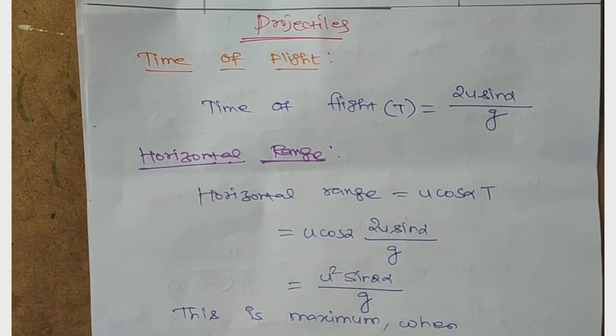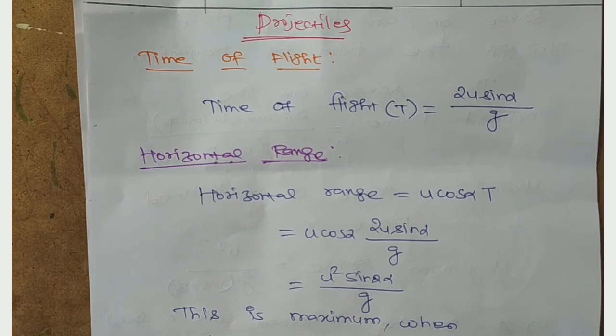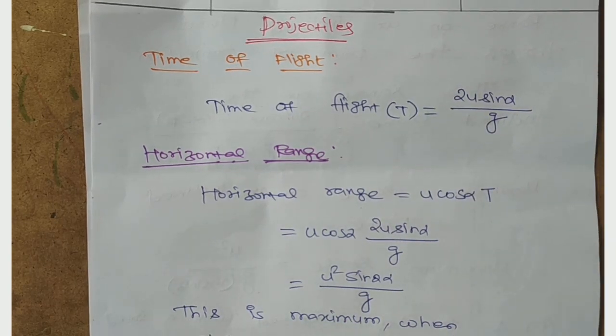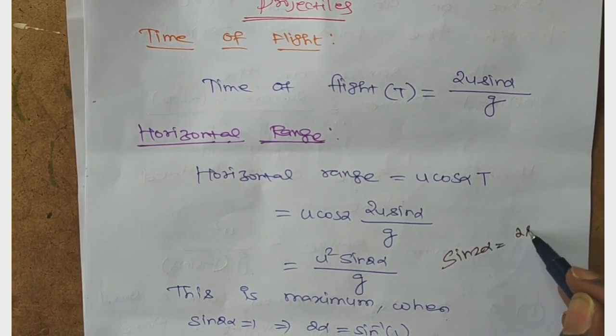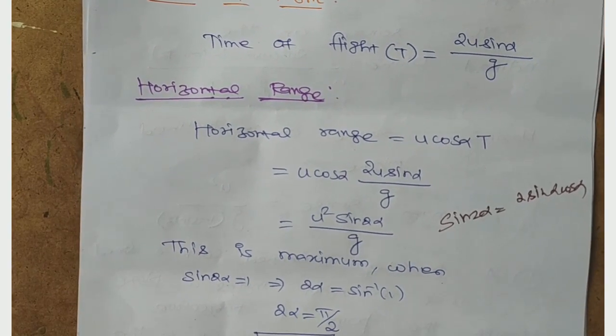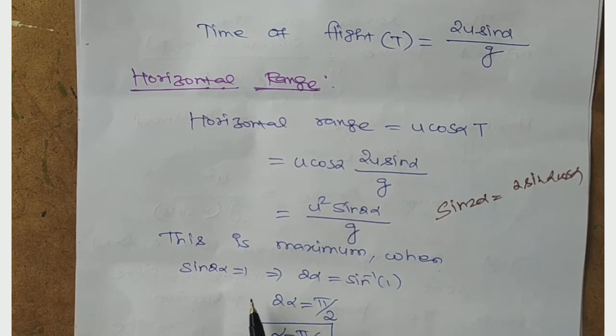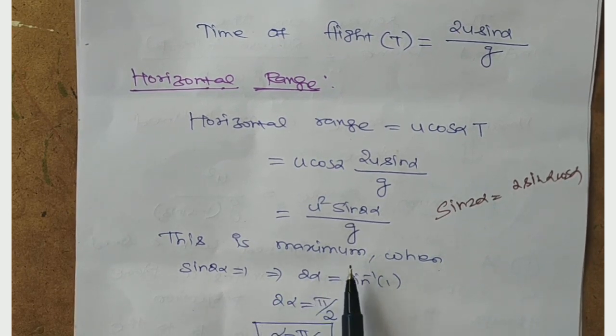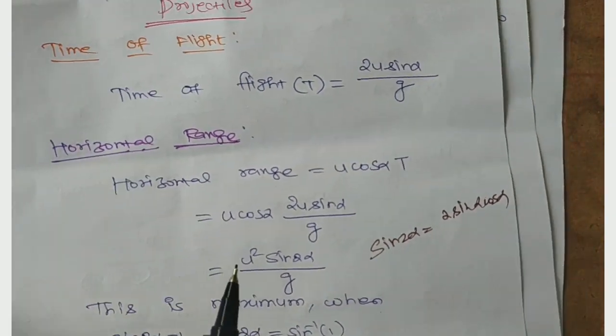Next, horizontal range. The horizontal range is u cos α into T, that is 2u² sin α cos α divided by g. Maximum when sin 2α equal to 1, sin value is π/2, so α is π/4.